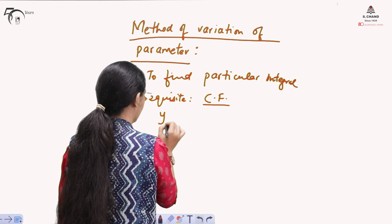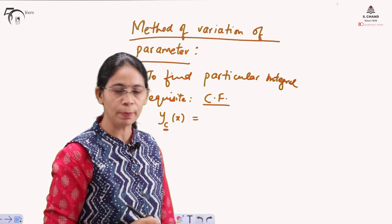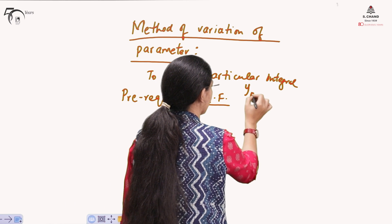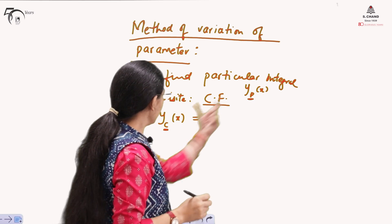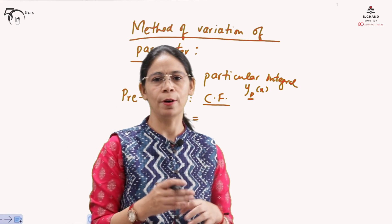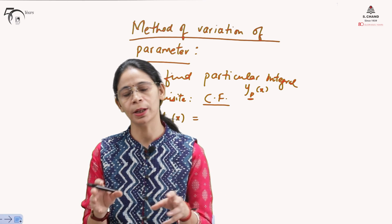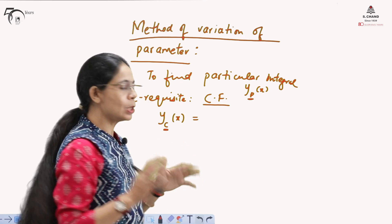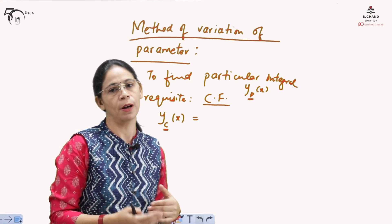The complementary function will be written as Y_C(x), where the subscript C stands for the complementary function part, and the particular integral part will be written as Y_P(x), where the subscript P stands for particular integral. These are the two parts of the general solution of a linear differential equation of any order.